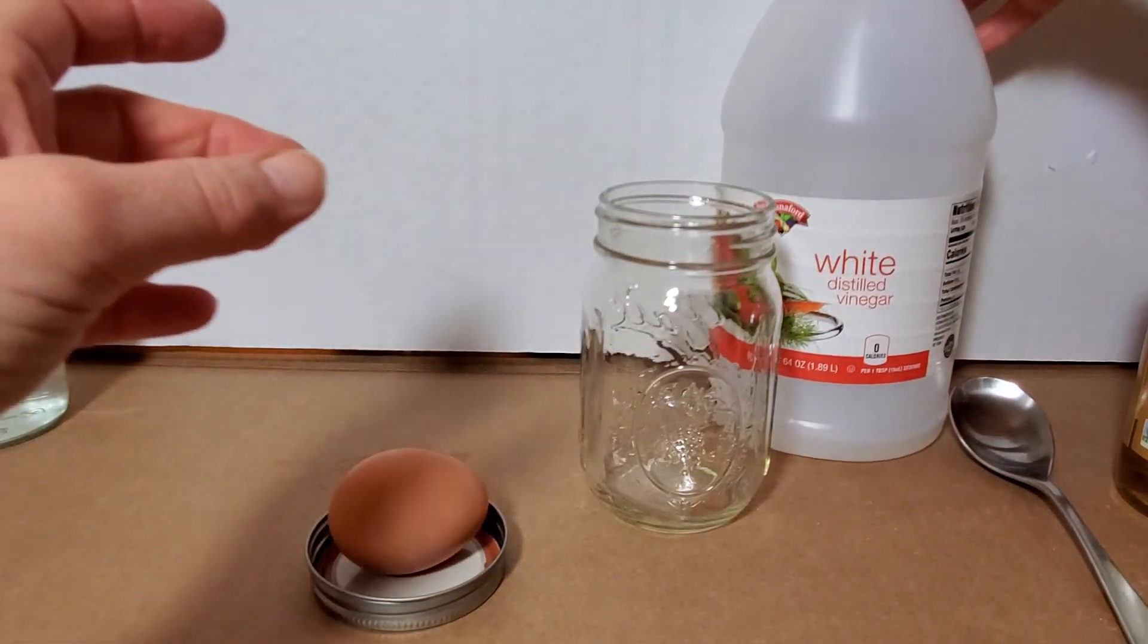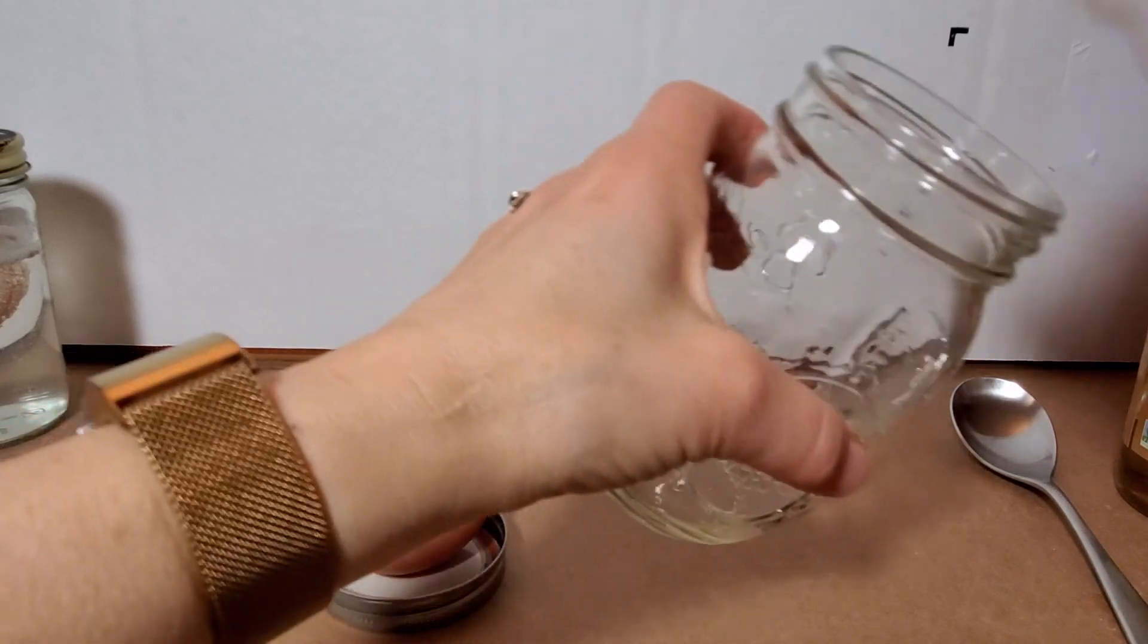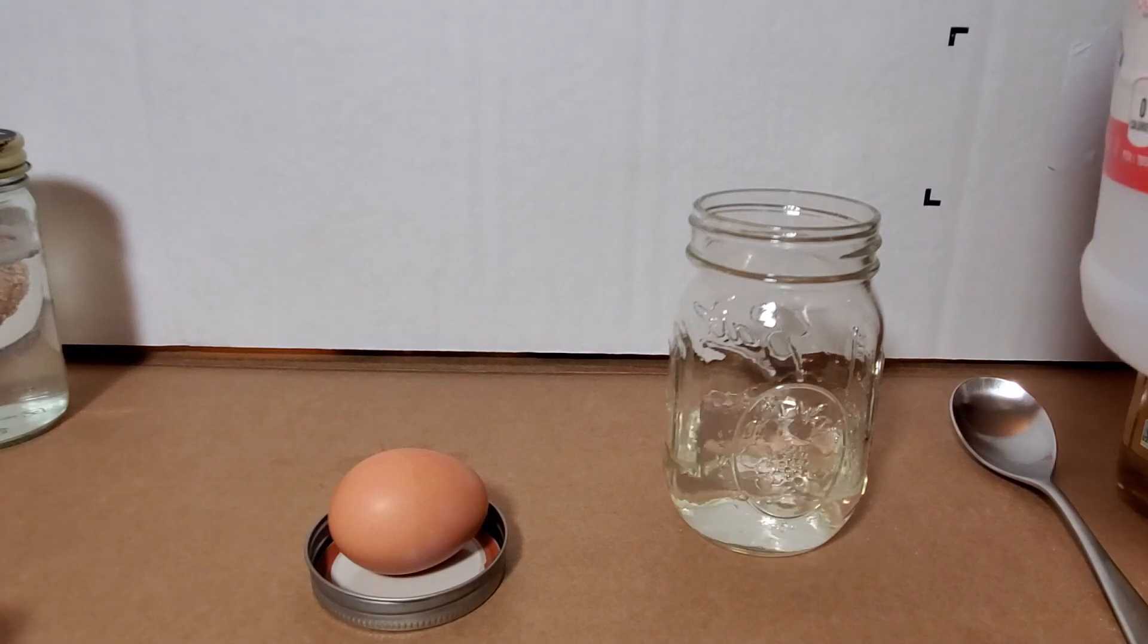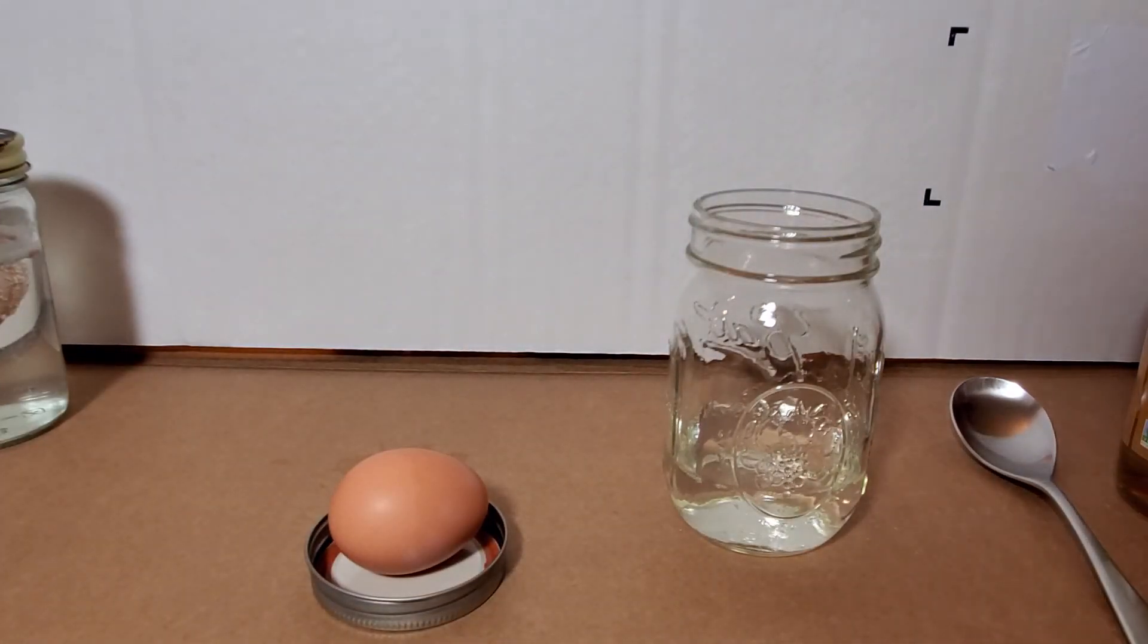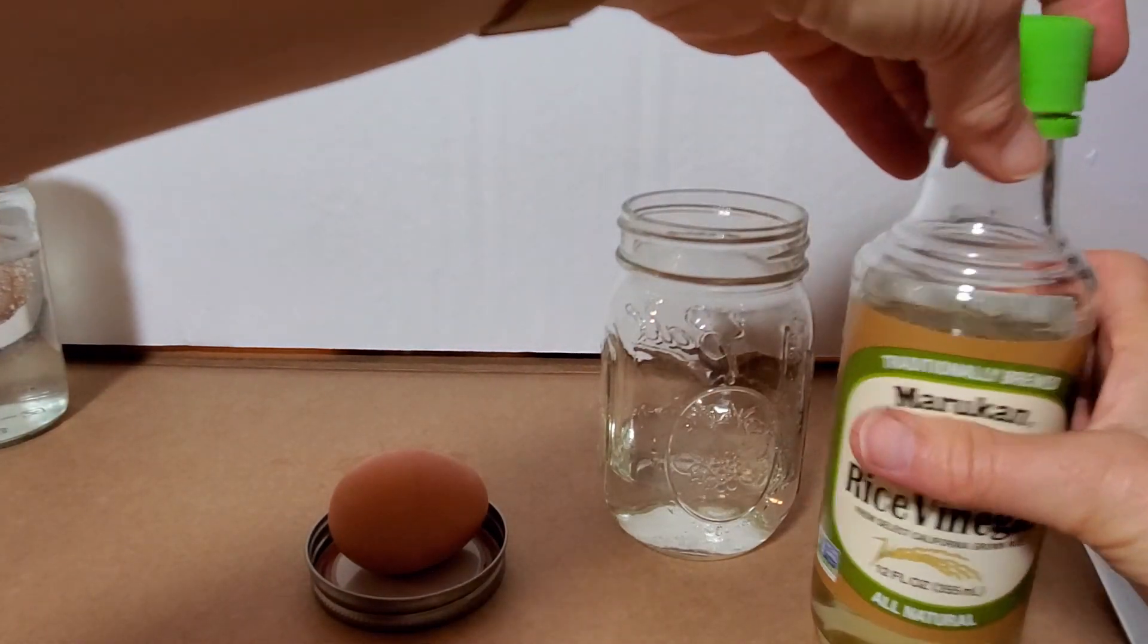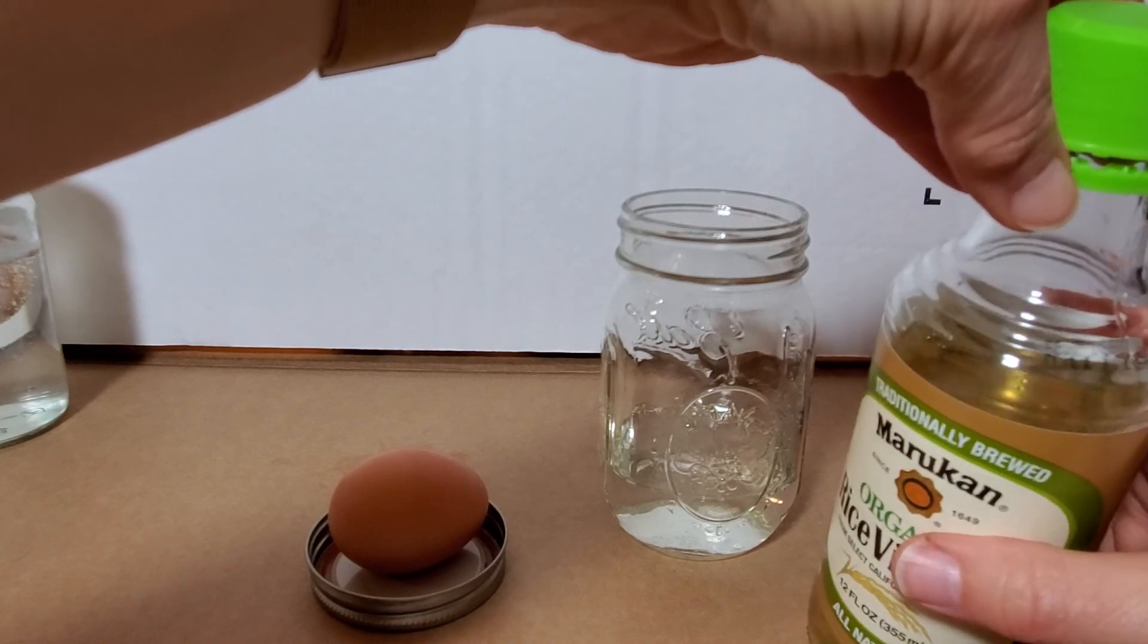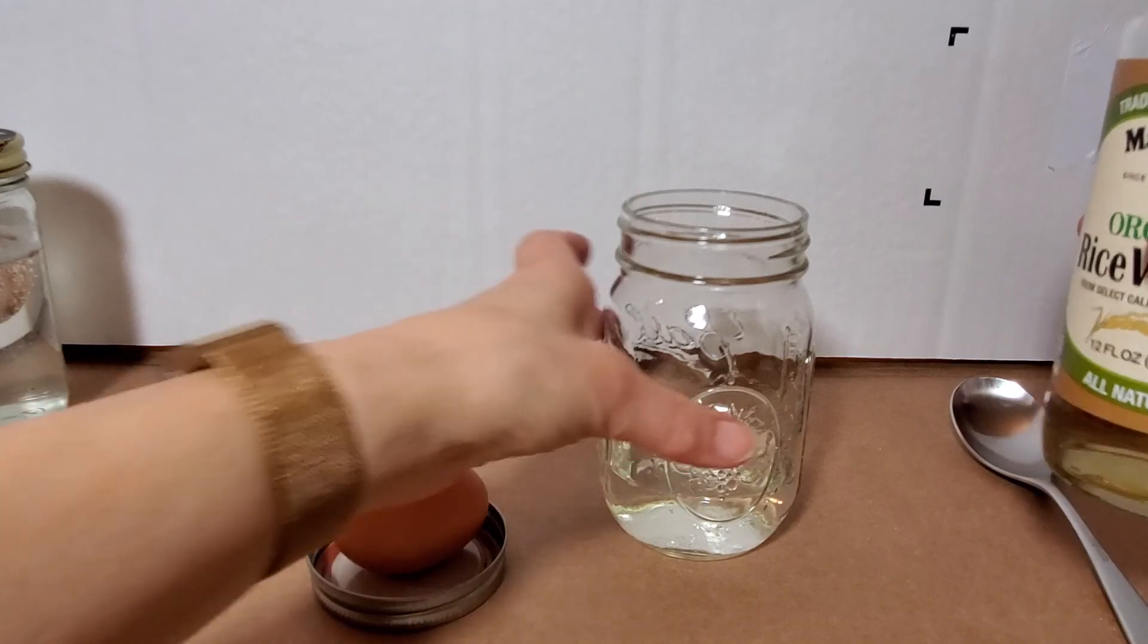So to start I'm going to need about one to two cups of vinegar, just enough to cover the egg. The shell of the egg is made out of calcium carbonate and the acetic acid in the vinegar is going to react with the calcium carbonate. Now you can see I was right, I definitely don't have enough vinegar there to cover the egg. So this has been in my cupboard for years, I was trying to find a date on it. Best used by April 2019, so I think this is a good one for me to use up.